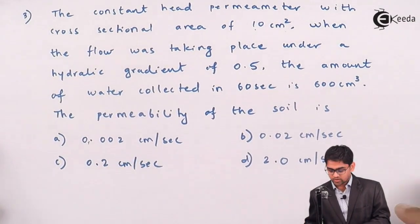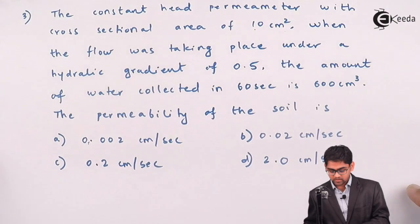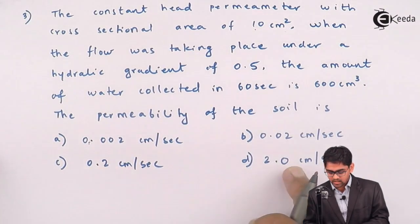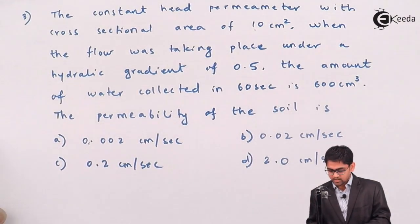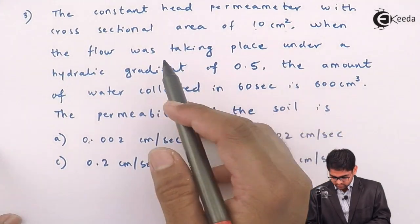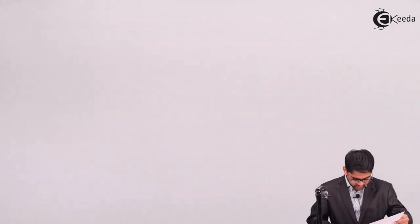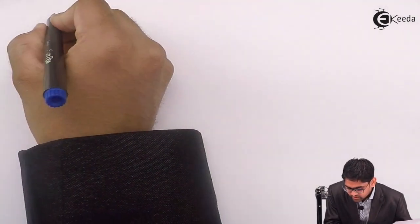The options are 0.002, 0.2, and 2 cm per second. Since in the question, I will write down all the given data from the question.